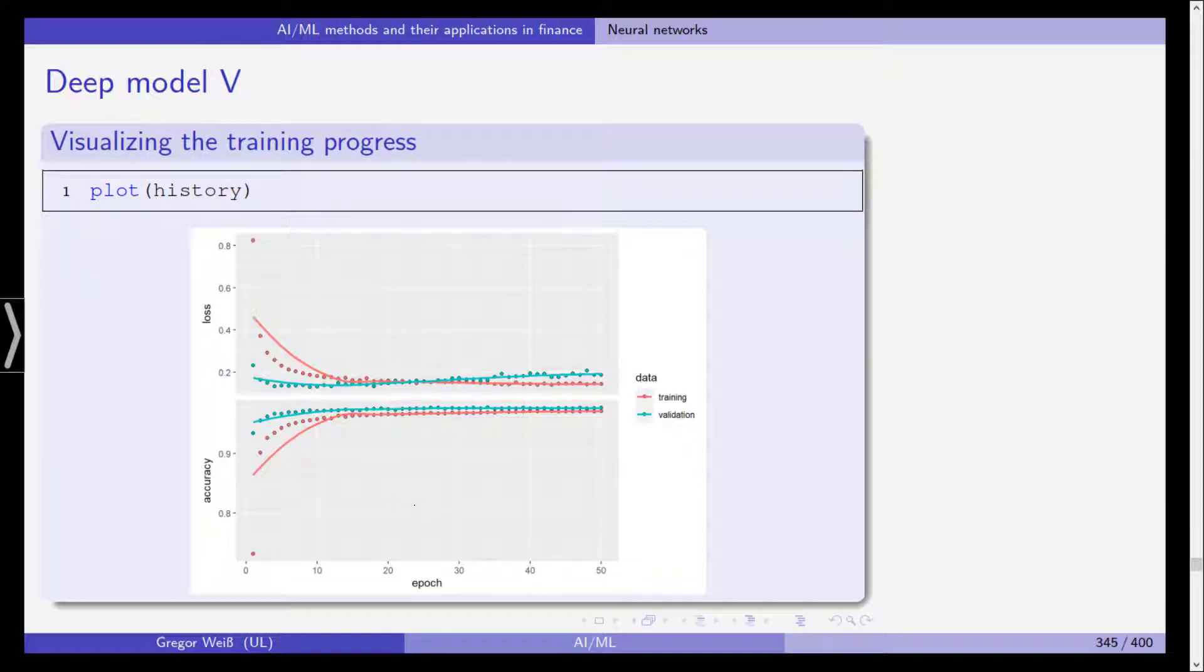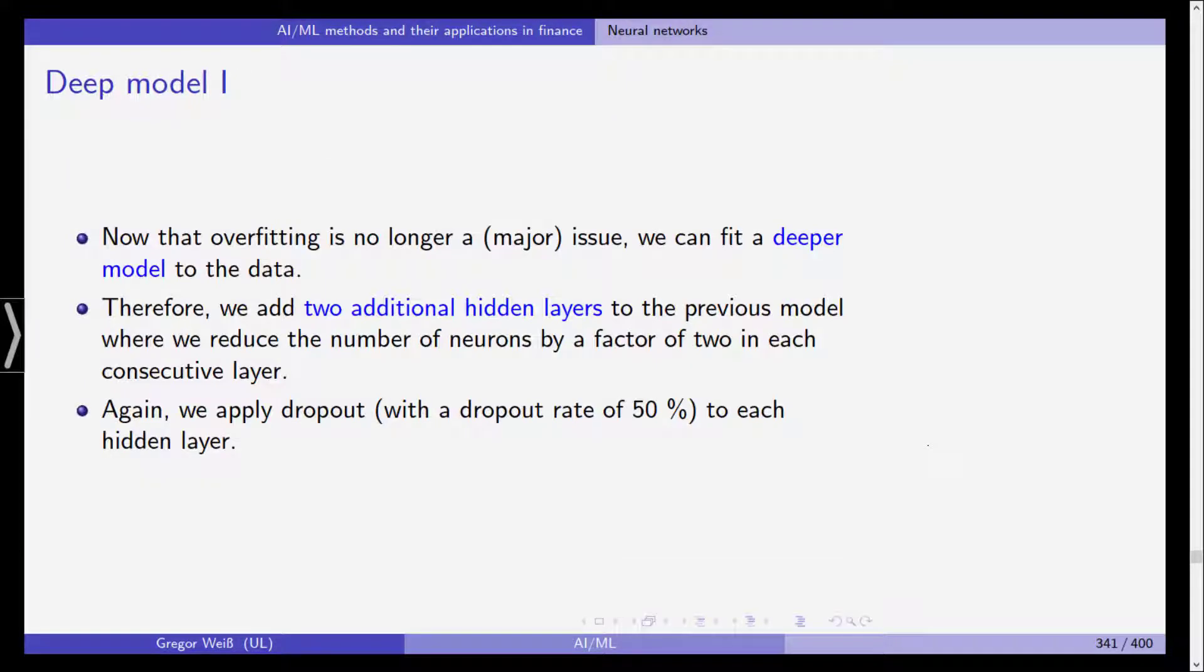We visualize the training process and as we can see now actually the accuracy is quite high for both the training and the validation set. And actually the loss is also rather low for both the training, not surprisingly, but also for the validation set. And if we compare this to the single layer perceptron.